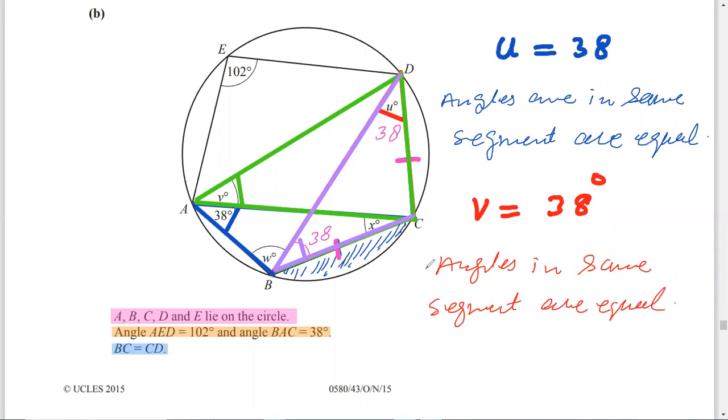So in this way we have these two angles found. Now what will be the angle W? Because ABDE is cyclic quadrilateral, therefore opposite angles are supplementary. So in this way W plus 102 is equal to 180 degree, so W is equal to 180 degree minus 102 and W is 78 degree.